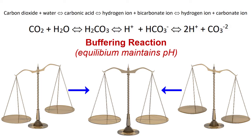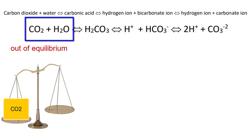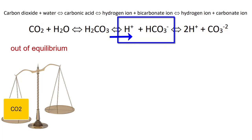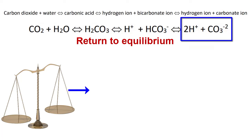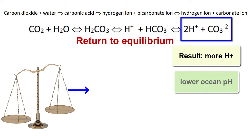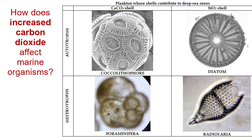While this buffering equation maintains steady ocean pH, there is one way to change it: add more carbon dioxide. Adding CO₂ sets the equation out of balance, weighing down the left side. The CO₂ combines with water to produce carbonic acid, which dissociates into H⁺ and bicarbonate, which further dissociates into more H⁺ and carbonate. Balance is restored, but the result is an increase in H⁺ ions, thus decreasing the pH of the oceans — even a small change in H⁺ concentration has a big effect on ocean pH.